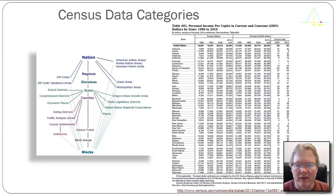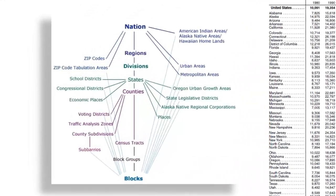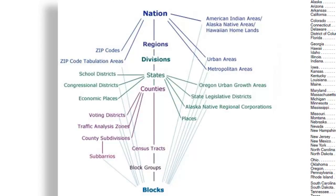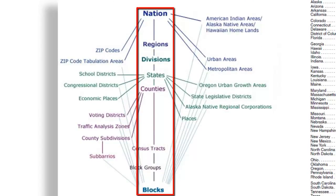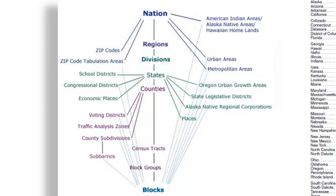The Census Bureau collects a lot of different data. If you look at the tree trunk down the middle of the graphic on the left, it shows the major levels of aggregation of census data. The Census Bureau has data down to the level of the block — places where we live. They can also produce data in block groups, census tracts, counties, states, divisions, regions, and then of course as a nation as a whole. The branches off of that tree trunk are sub-studies that they do at different levels of analysis.